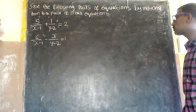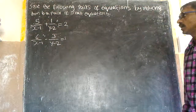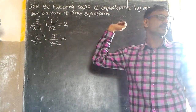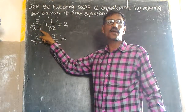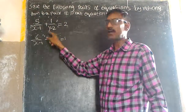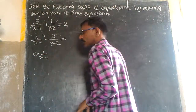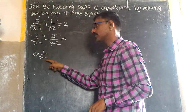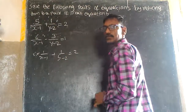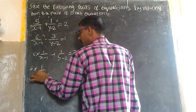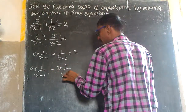Solve the following linear equations by reducing them into a pair of linear equations. The given equations are: 5 into 1 by (x minus 1), plus 1 by (y minus 2), is equal to 2. And 6 into 1 by (x minus 1), minus 3 into 1 by (y minus 2), is equal to 1.